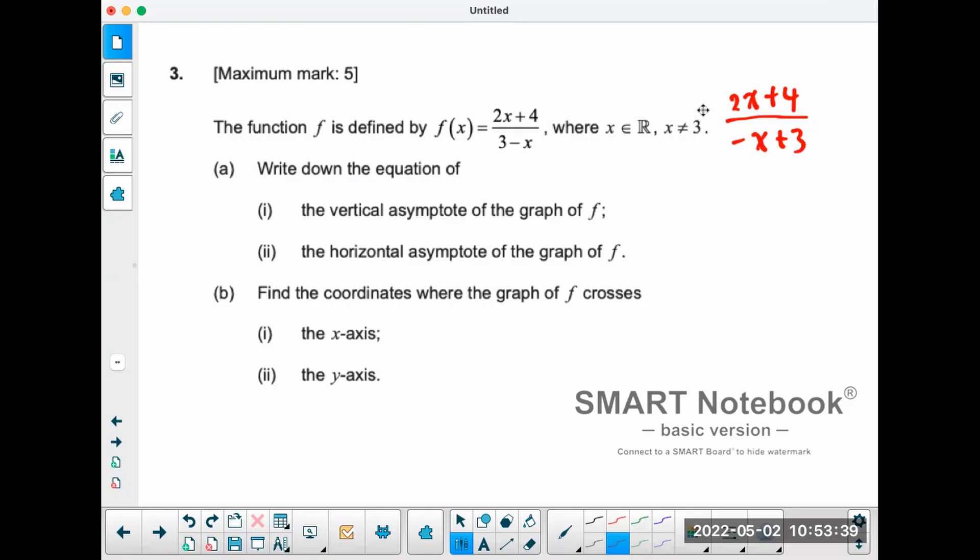So it's easier to tell what the vertical and the horizontal asymptote is. The vertical asymptote is the denominator equal to zero. So you set that equal to zero, x is going to equal to three. So the vertical asymptote of the function is x equals three.